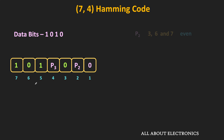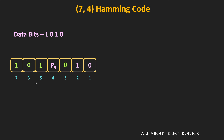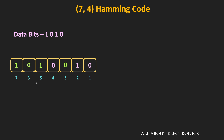Similarly, P2 is selected such that the overall parity of P2 and the bits at positions 3, 6, and 7 is even. At positions 3, 6, and 7, the bits are 0, 0, and 1. Therefore, for even parity, P2 should be equal to 1. Likewise, P3 is selected such that the overall parity of P3 and the bits at positions 5, 6, and 7 is even. At bit positions 5, 6, and 7, the bits are 1, 0, and 1. For even parity, P3 should be equal to 0. This gives us the overall 7-bit Hamming code for the given data bits.